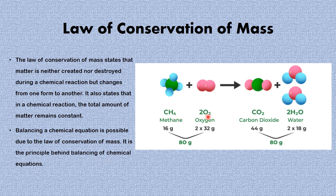Here we have methane reacting with oxygen gas to form carbon dioxide and water. Looking at the relative atomic masses of carbon, hydrogen, and oxygen: methane here has a mass of 16, oxygen here is 64, and adding them together gives 80 grams. On the product side, if you add all the relative atomic masses of the elements in carbon dioxide and water, it still gives exactly 80 grams. You have 80 grams on the reactant side and 80 grams on the product side, which shows that the law of conservation of mass is relevant in balancing chemical equations.